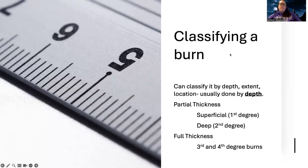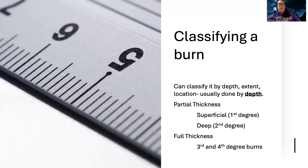Burns not only have types — or sources — they also have classifications. We can classify them based on depth, extent, or location, but usually we do it by depth: how deep into the skin tissue are we going, all the way to the muscle. They're categorized into either partial thickness, which is first and second degree burns — either superficial or deep — or full thickness, which is third and fourth degree burns.